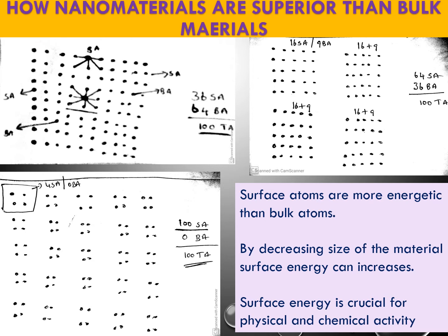Briefly, if you take a bulk material, it has around 36 surface atoms and 64 bulk atoms. When you cut this bulk material into 4 parts, you now get 64 surface atoms and 36 bulk atoms. So when you cut the bulk object into parts, surface atoms increase and bulk atoms decrease. If you cut into 25 equal parts, you will get 100 surface atoms and 0 bulk atoms. So by decreasing the size of the object, you are increasing the number of surface atoms.